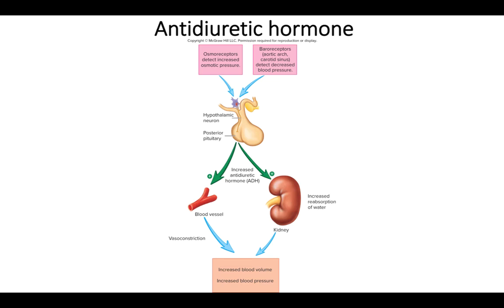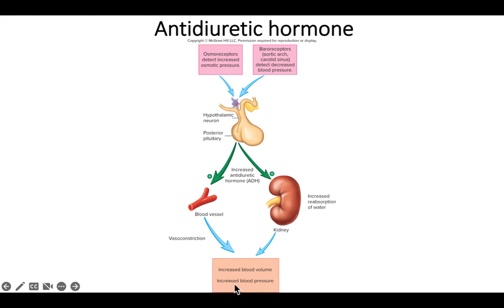ADH is produced when you're dehydrated or when blood pressure is too low. ADH is produced by the hypothalamus and transported to the posterior pituitary. When it enters the blood, it causes vasoconstriction, which helps raise pressure, and increases reabsorption of water, which increases blood volume and pressure.